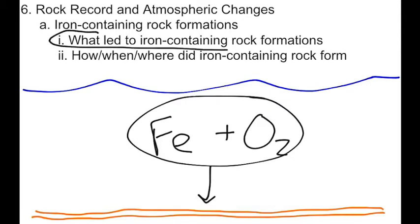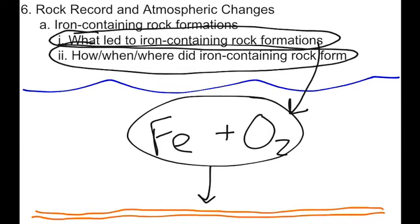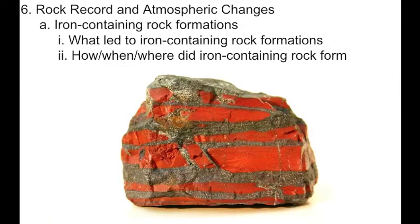So, what led to iron-containing rock formations? The presence of atmospheric oxygen. How did they form? They formed as sedimentary rocks. When? Billions of years ago in the Precambrian. And where? In the bottoms of oceans. And that concludes this podcast.